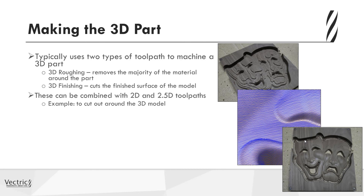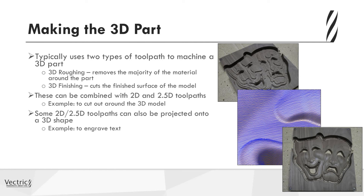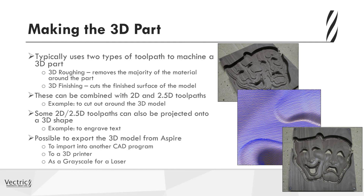As well as doing 3D toolpaths, you may want to combine these with 2D and 2.5D toolpaths. For example, you may want to run a 2D profile to cut around your 3D part. There are also 2D and 2.5D toolpaths that can be projected onto a 3D shape — for instance, you may run your 3D toolpaths first, then using a V-bit, project text onto the model with the V-carve toolpath. In addition to outputting to a CNC, you may want to export the 3D model to another CAD program, to a 3D printer as a mesh, or as a 2D grayscale for laser cutting.